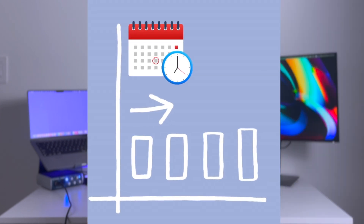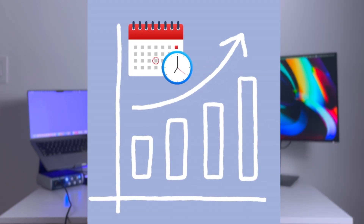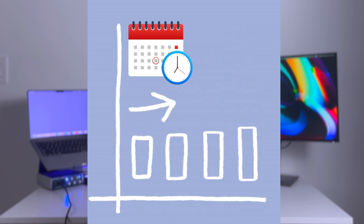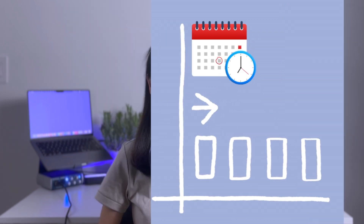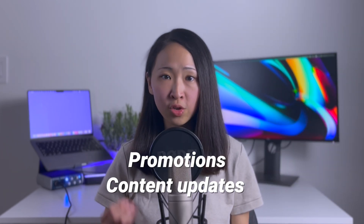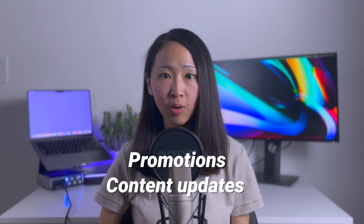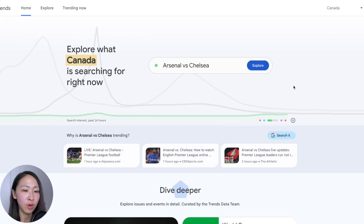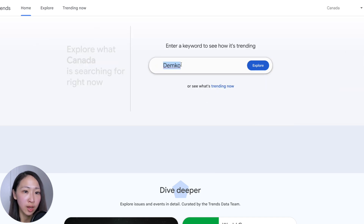The next use case: predict seasonality for promotion planning and content updates. With trend data we know what topics to focus on, but getting ahead of the curve is also important. That's why we want to do promotions and content updates before the trend starts to grow, and this is where Google Trends can help you predict that.